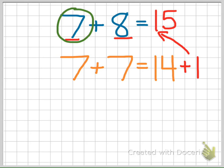So the rule for side-by-side is to take the smaller number and double it. Once you double the smaller number, you simply add one more to your sum to get the answer.